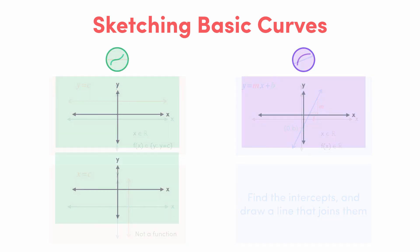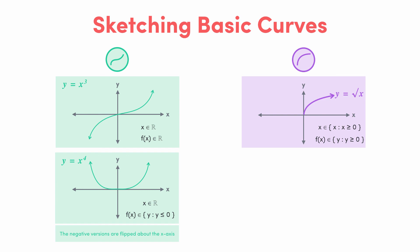Then we had a look at some polynomials. Simple cubics and quartics have these shapes, with their negative versions just flipped around the x axis. Finally, we checked out y equals root x, which looks like half of a parabola heading upwards to the right. I've labelled the domains and ranges of each of these functions on the graphs, so you can practise identifying these. And always remember to label the intercepts and one other point.